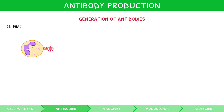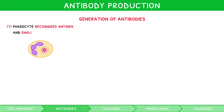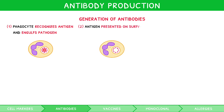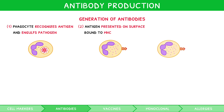First, a phagocyte recognizes the antigens and engulfs the associated pathogen. Then, it strips the pathogen of antigens, presenting them on the phagocyte surface bound to MHC complexes. Then, another type of white blood cell known as a helper T cell recognizes these antigens bound to MHC with its complementary binding sites.